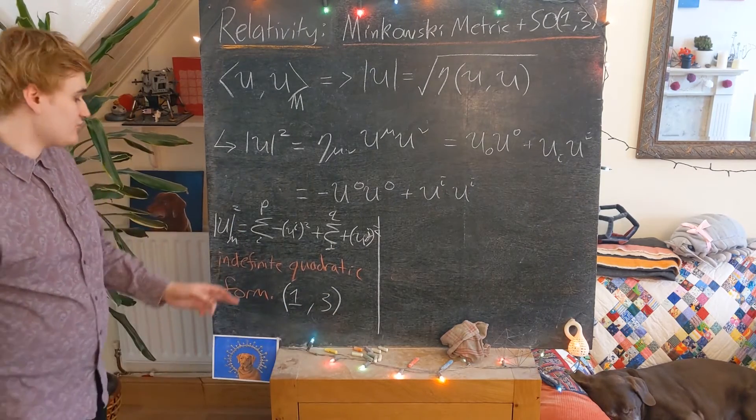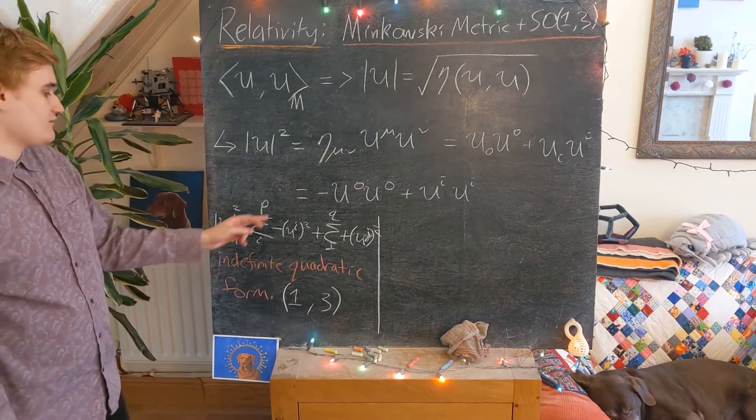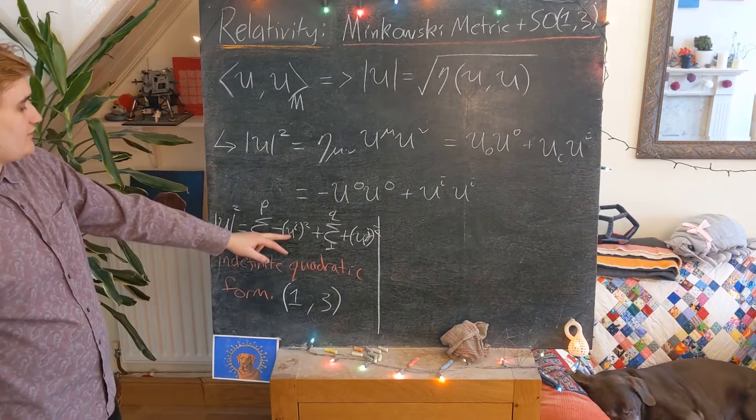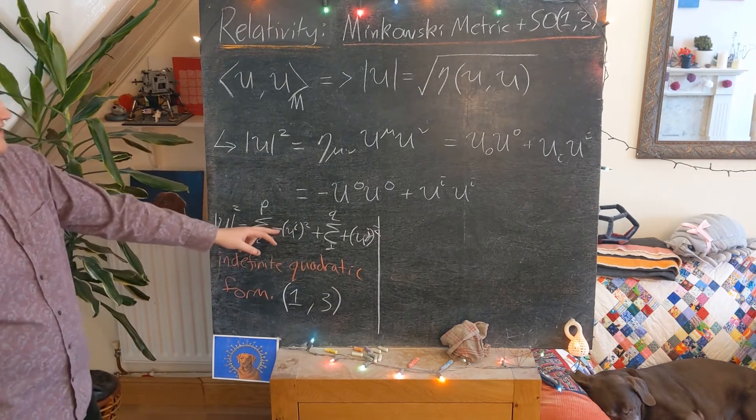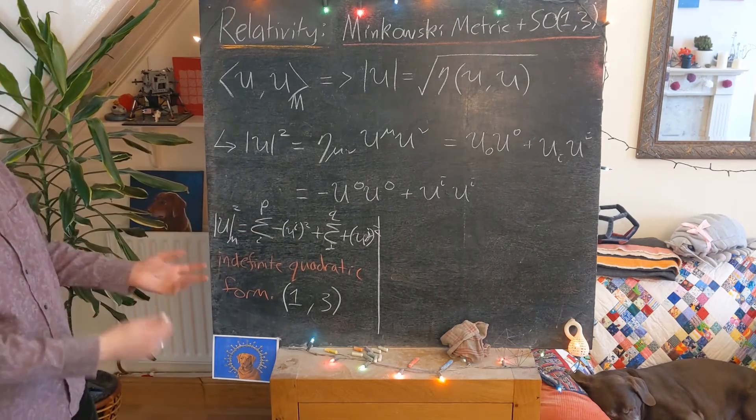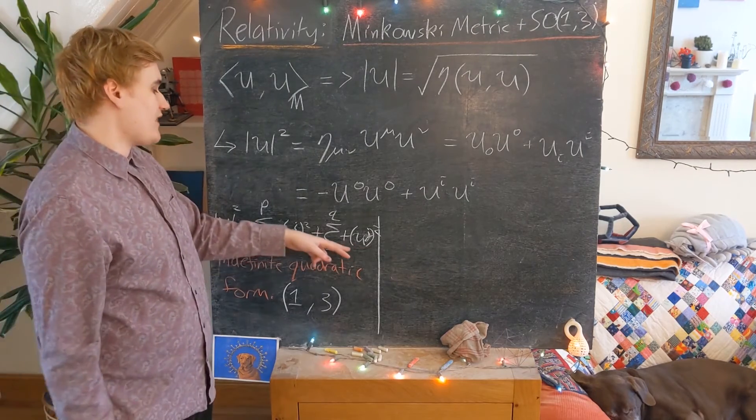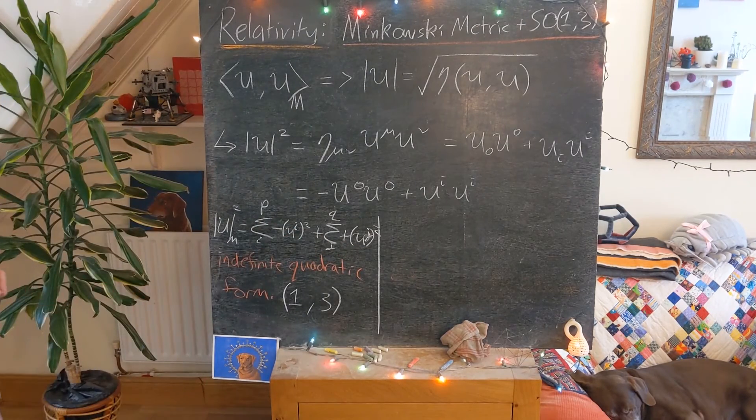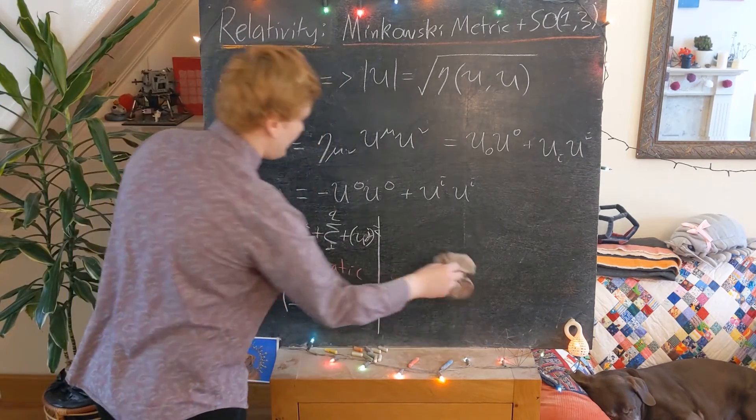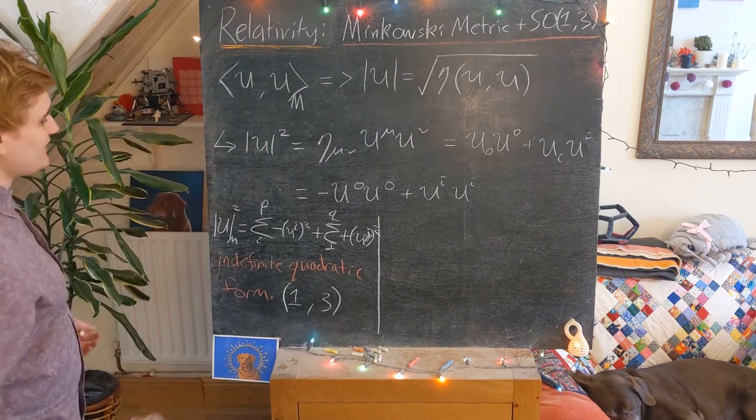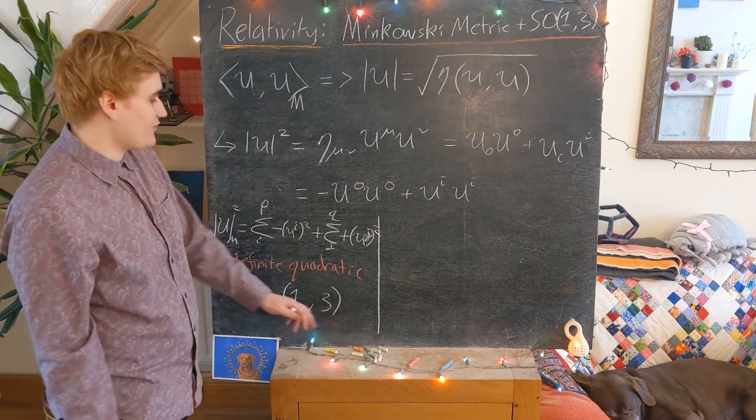So then in general, a quadratic form of signature p,q would look like p lots of the first u⁰ up to uᵖ components taken with a negative and then squared. And then from p up to q, the remaining components u squared and have been a positive. So just another really, really fancy way of saying what the Minkowski metric is. Is you can say that it's an indefinite quadratic form with signature (1,3).